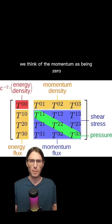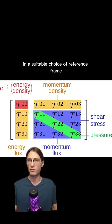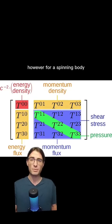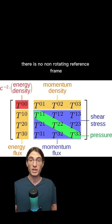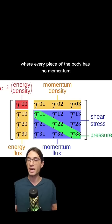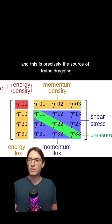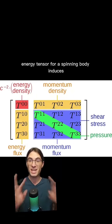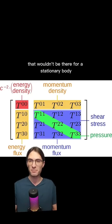Now, in many cases, we think of the momentum as being zero in a suitable choice of reference frame. However, for a spinning body, there is no non-rotating reference frame where every piece of the body has no momentum. And this is precisely the source of frame dragging. The angular momentum captured in the stress-energy tensor for a spinning body induces extra curvature that wouldn't be there for a stationary body.